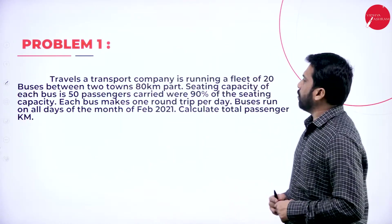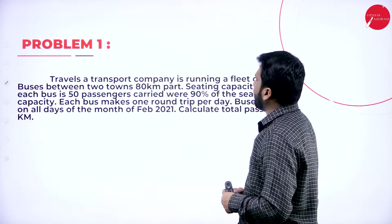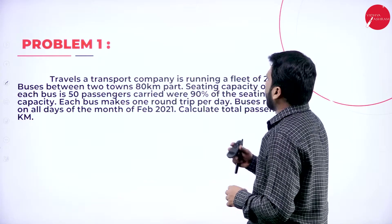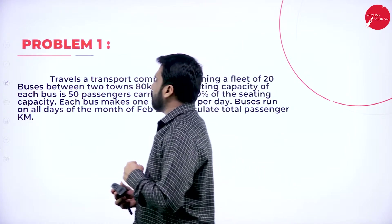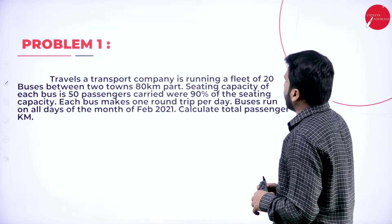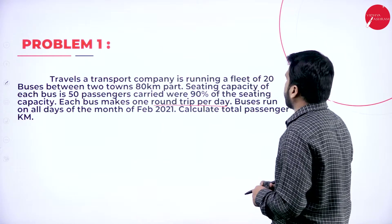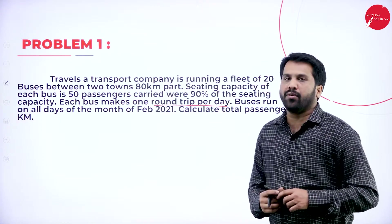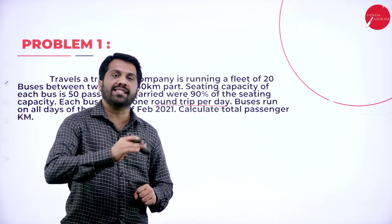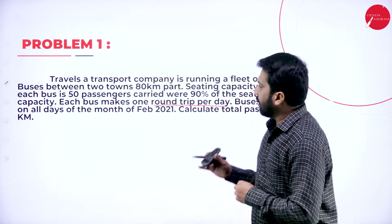Problem 1: A transport company is running a fleet of 20 buses between 2 towns 80 kilometres apart. Seating capacity of each bus is 50 passengers, but only 90% of seats are occupied. Each bus makes one round trip per day. Buses run on all the days of the month of February 2021. Calculate total passenger kilometres. We are not calculating cost per kilometre — only total passenger kilometres.